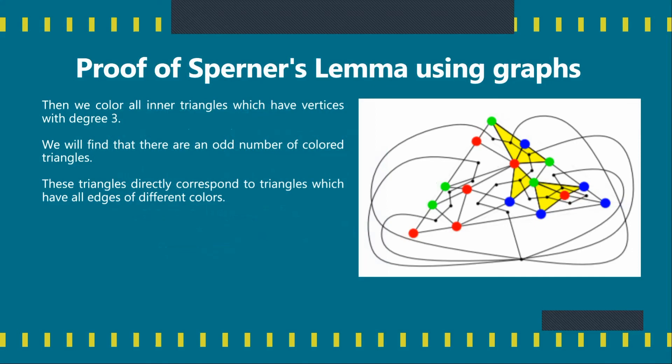We also add an additional vertex outside and then connect this outside edge to the inner edges based on whether there's a multi-colored boundary edge for that triangle. For example, in the topmost sub-triangle, we see that there's a red and green multi-colored boundary edge, so there's been a connection to the outside vertex. After this connection to the outside edge, we find and fill in the inner triangles which have a vertex of degree three, and basically we find that every single triangle which we've colored in yellow is a triangle which has all multi-colored edges and this is basically proof of Sperner's Lemma using graph theory.